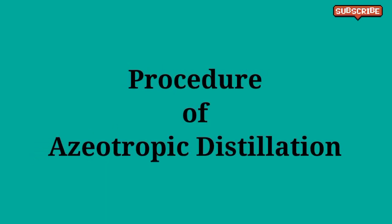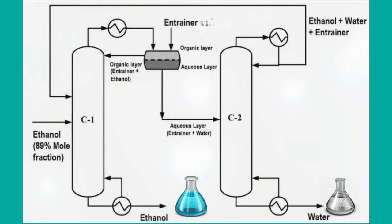We will now discuss the procedure of azeotropic distillation. An ethanol and water mixture is taken, and an entrainer like benzene is added to it in the flask. The entrainer produces an azeotrope, which becomes vapor and forms two layers known as the organic layer and the aqueous layer. The organic layer contains the entrainer. Some of the entrainer may return back to column 1, while the aqueous and entrainer mixture moves towards column 2. Due to steam, the water is separated below the column and the entrainer returns back to column 1. That is how we can separate an azeotropic mixture.